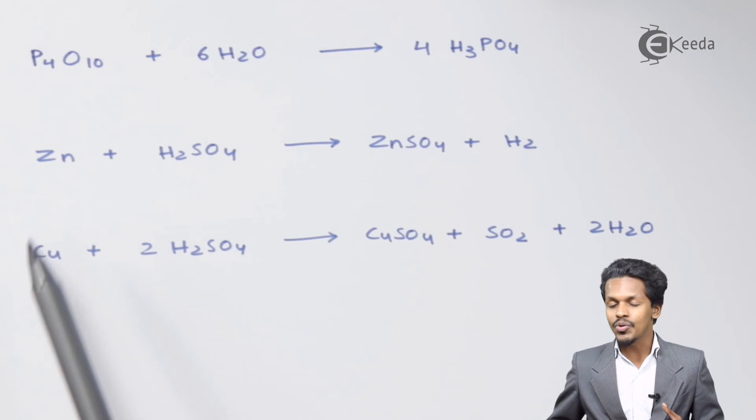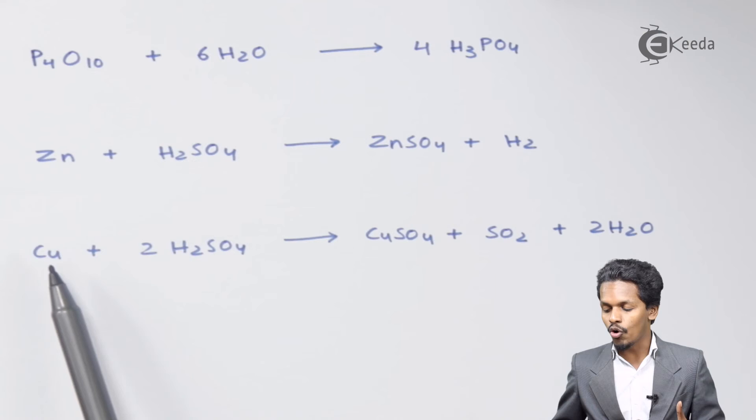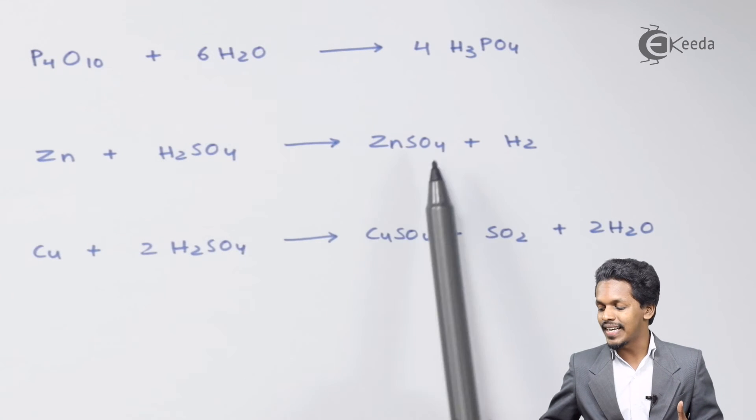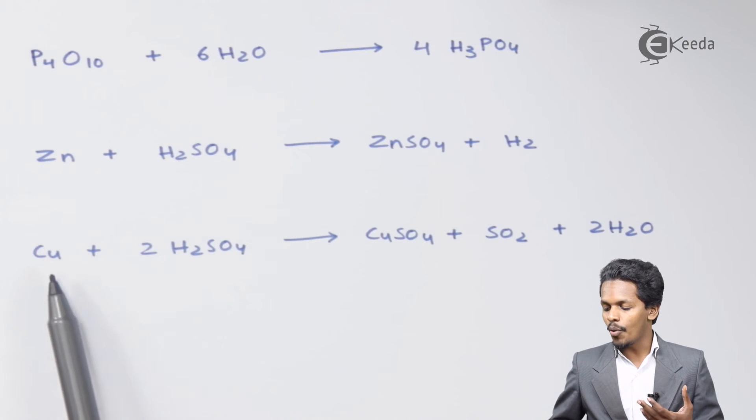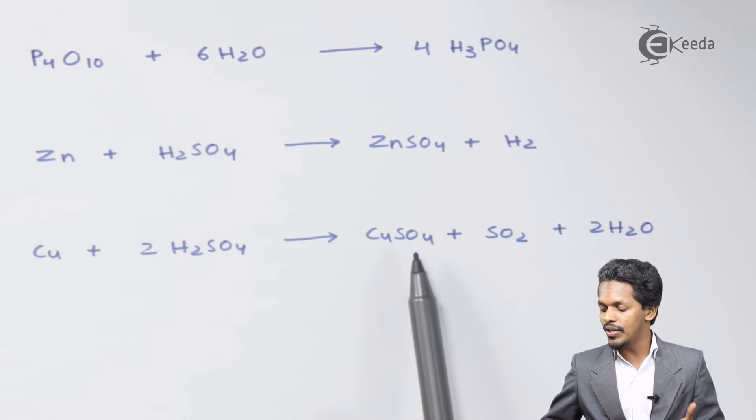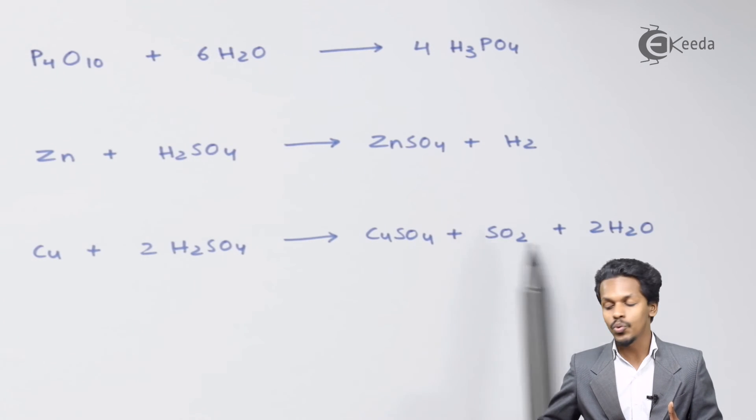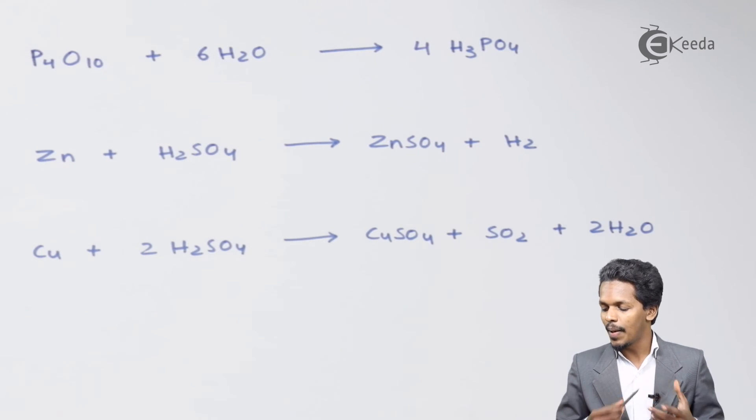Talking about the next one, it can also react with d-block elements like zinc and copper. Whenever it reacts with zinc, it forms ZnSO4 by elimination of H2 gas. And if copper is treated with H2SO4, there will be formation of CuSO4 along with SO2 and 2 moles of H2O as a byproduct.